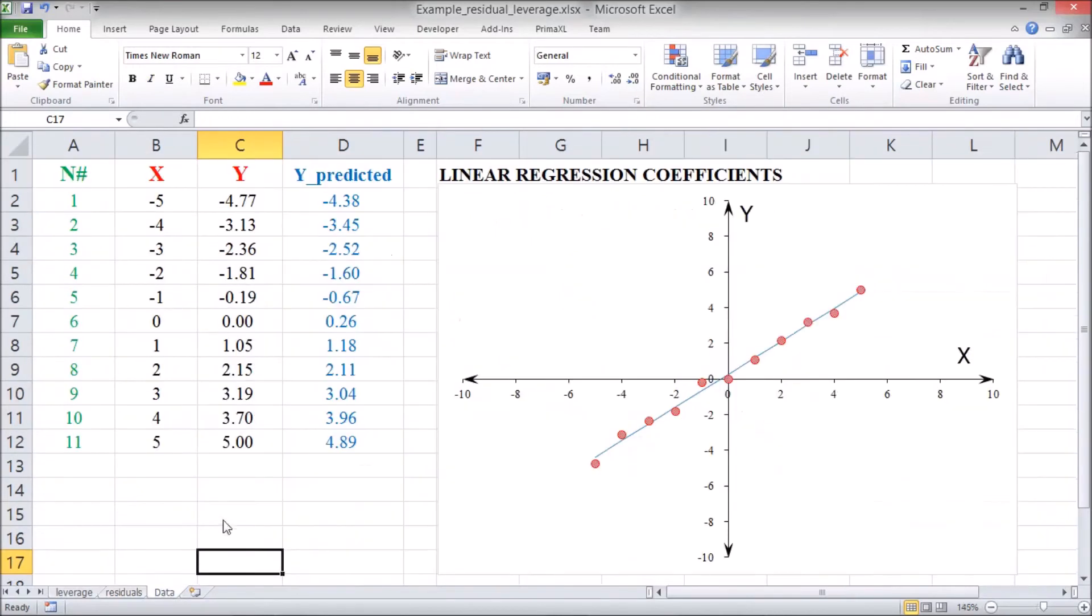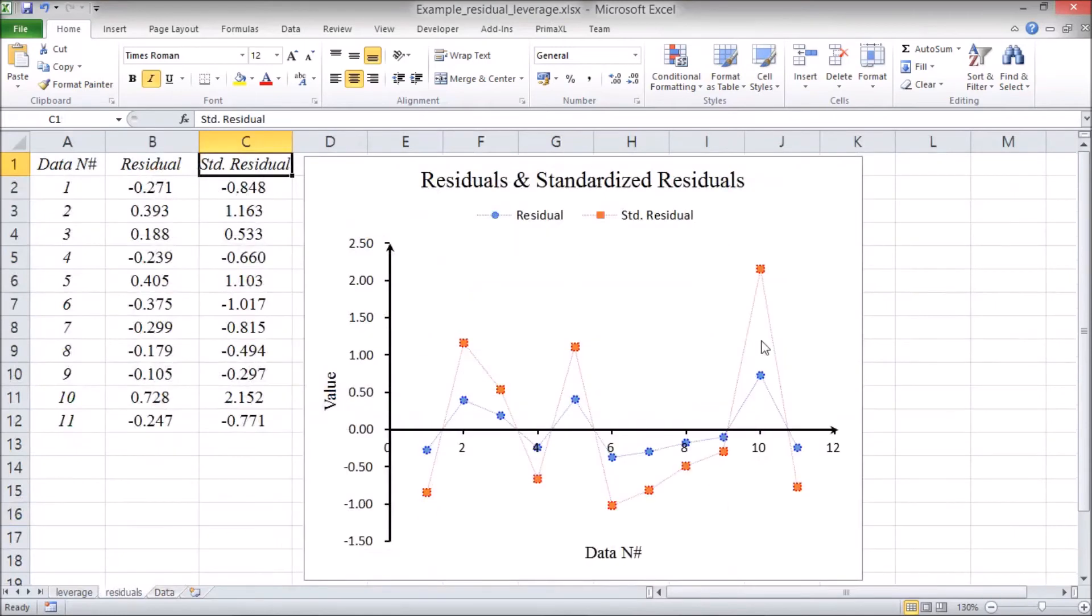Back to the datasheet, let us change our y value to something else. We can notice that the corresponding Residuals has increased. When the Standardized Residuals is beyond the range of minus 2 and 2, we could say that we have an outlier in the y value.